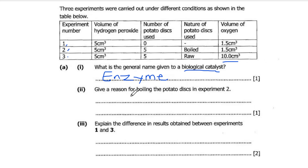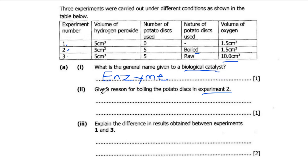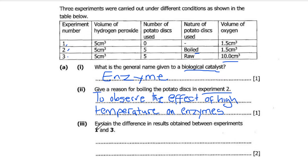Next part: Give a reason for boiling the potato disc in experiment 2. The reason why the potato was boiled is to observe the effect of high temperature on the enzymes.